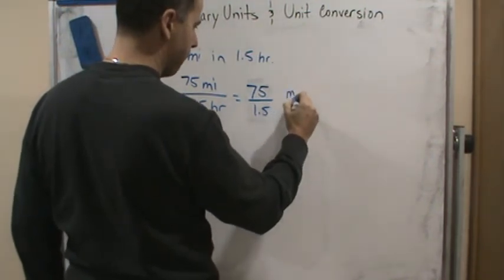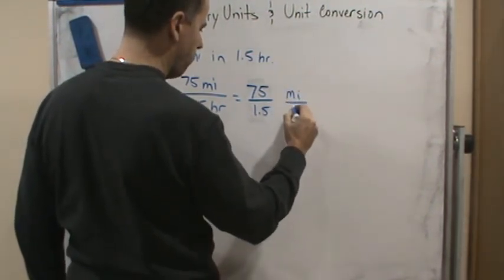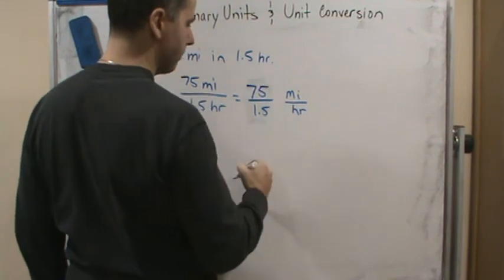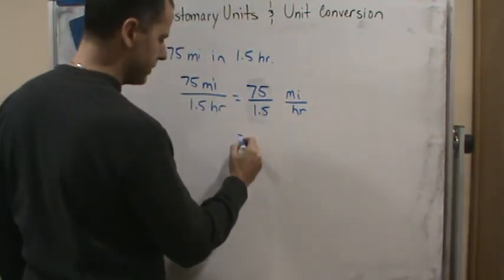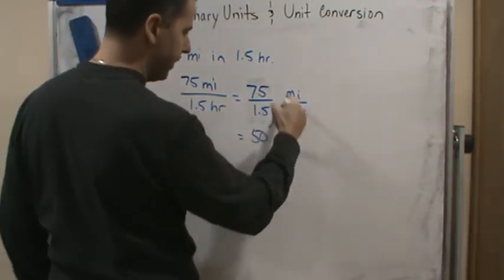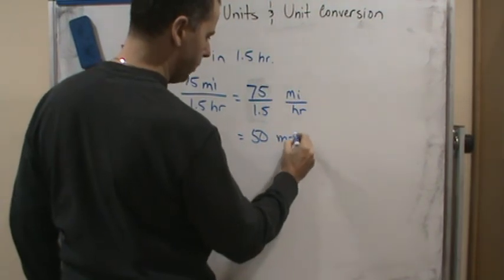And over here we would have miles per hour. Well, this translates to 50, and then this just becomes miles per hour.